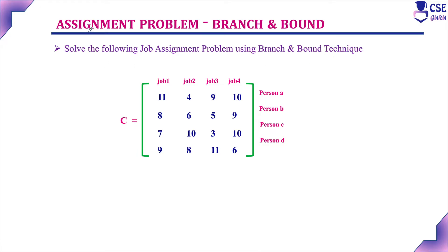What is the assignment problem? Here, we have n jobs with n persons. Our constraint is to assign exactly one job to one person, and each job should be assigned to exactly one person, such that the total cost of completing all jobs is minimum. The jobs and persons along with cost of completing each job are given in a matrix form.